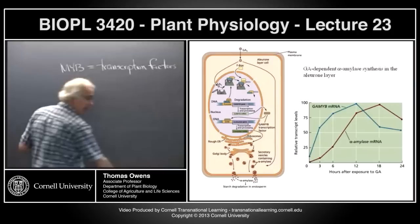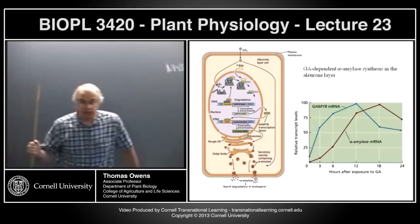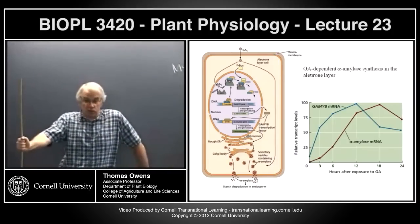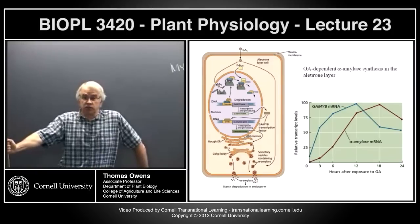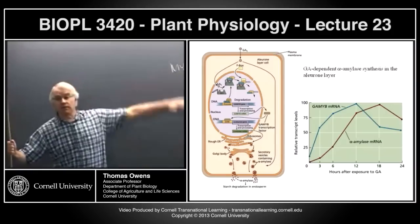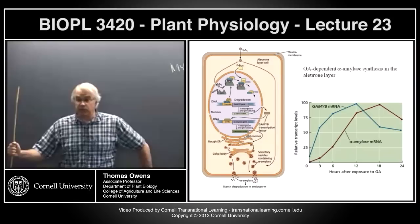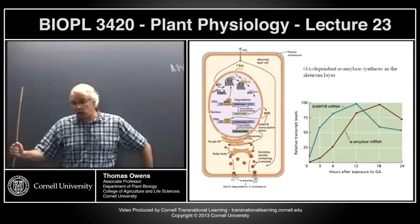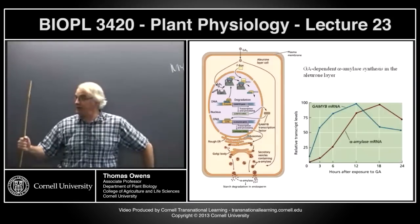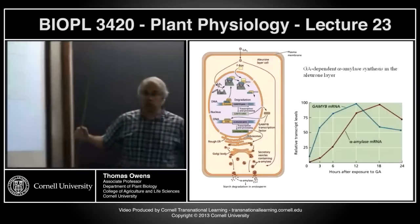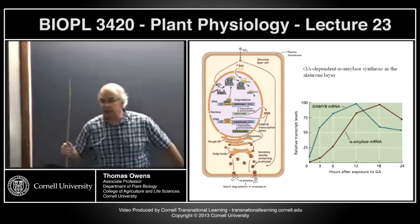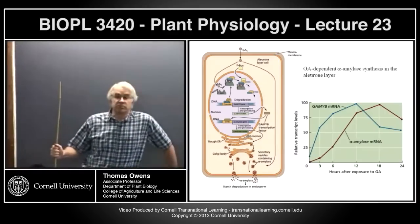The MYB proteins are a big family of transcription factors. There are roughly 100 of them in Arabidopsis. They were originally discovered associated with light-dependent genes, but it turns out that MYB proteins play a role in regulating all sorts of different types of transcription.